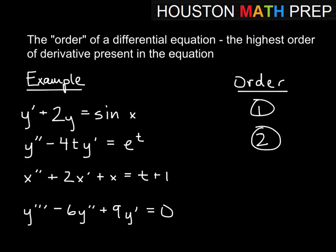Next one is really kind of similar to the second one, except we have x double prime plus 2x prime plus x equals t plus 1. Our derivatives are now of x and the other variable is t, so likely we're talking about derivative with respect to t of x there. Again, the second derivative being the highest order, so that's a second order differential equation.